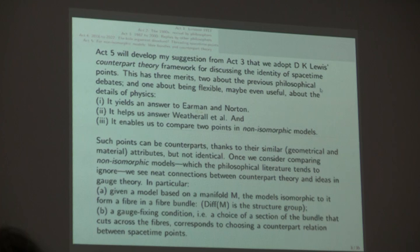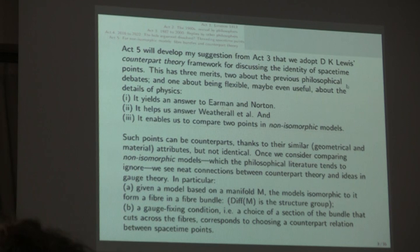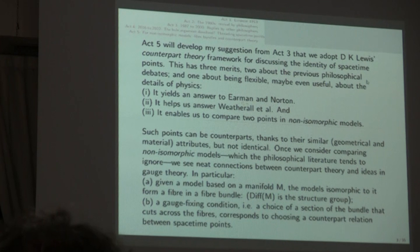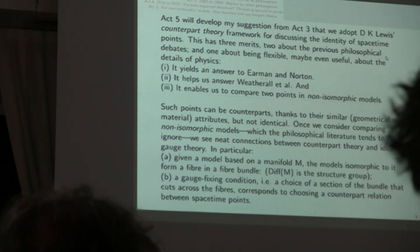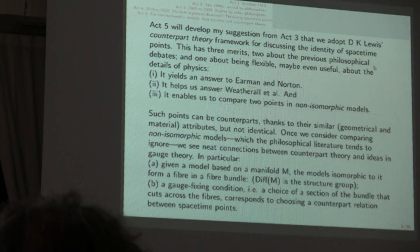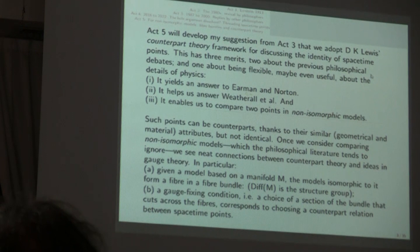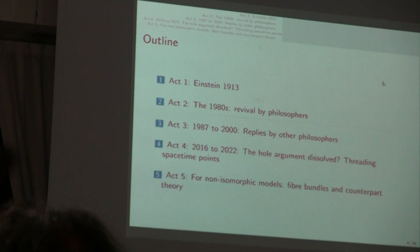If you're just looking at Lorentzian manifolds, the isometry class of a given Lorentzian manifold will be a fiber in an infinite dimensional fiber bundle, and the diffeomorphism group on the fixed spacetime manifold N would be the structure group of this bundle. So the fibres are themselves infinite dimensional. And a gauge-fixing condition, a choice of a section of the bundle, corresponds to a counterpart relation. So that's the whole talk, really.